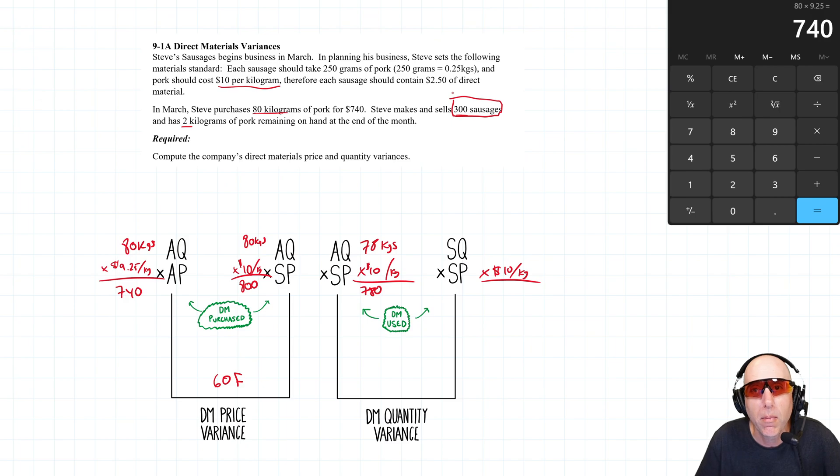So we actually made 300 sausages. If before the month or the week or before March, I told Steve, hey, you're going to make 300 sausages, how many kilograms of pork would Steve think that was going to take? And Steve figures it takes 0.25 kilograms, 250 grams of pork per sausage. So if Steve's making 300 sausages and it takes 0.25 kilograms per sausage, Steve would figure this should have taken him 75 kilograms of meat.